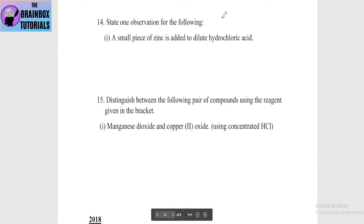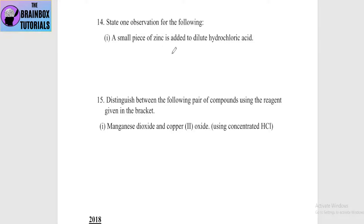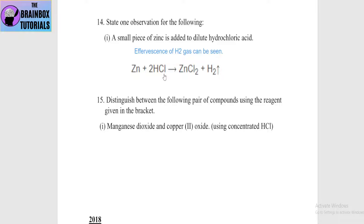Next: state one observation for the following — a small piece of zinc is added to dilute HCl. With effervescence, hydrogen gas comes out. Effervescence of H2 gas can be seen. The reaction is: Zn + 2HCl → ZnCl2 + H2 gas.